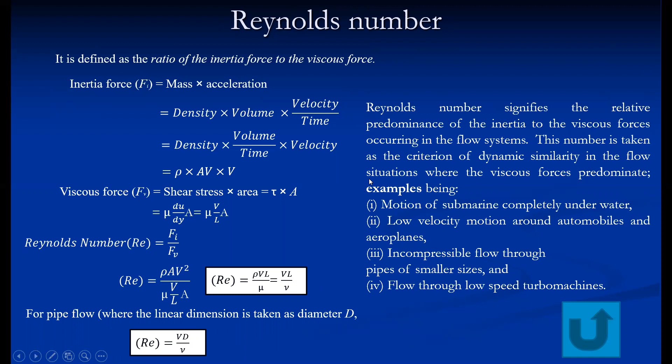Reynolds number signifies the relative predominance of inertia force to viscous force in the flow regions. This number is taken as a criterion for dynamic similarity in flow situations where the viscous force is predominant — for example, the motion of a submarine, low velocity flow around automobiles and aeroplanes, incompressible flow through pipes of small sizes, and flow through low-speed turbomachines.